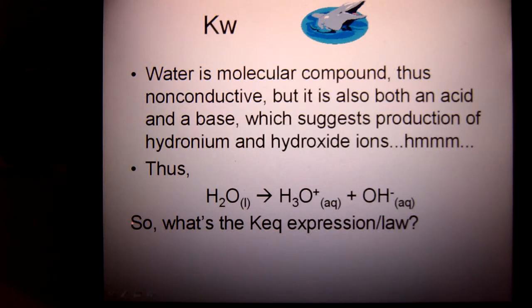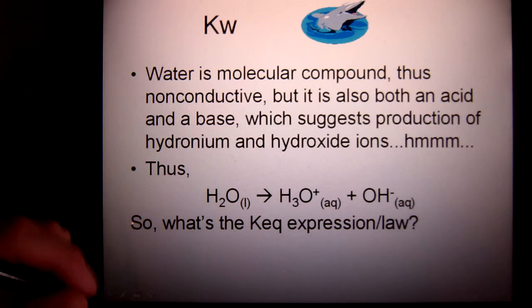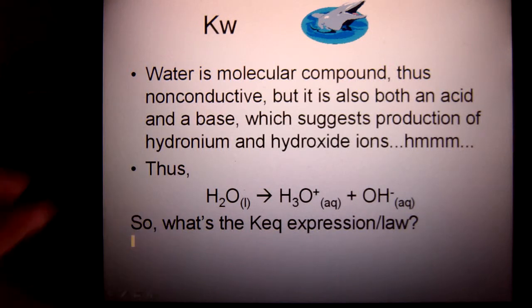In chemistry 20, you'd often be asked to determine the pH or pOH of a system, or given the hydronium of a system, how you could calculate the hydroxide. It was quite a long process with many steps. In Chem 30, you have a new term called Kw.